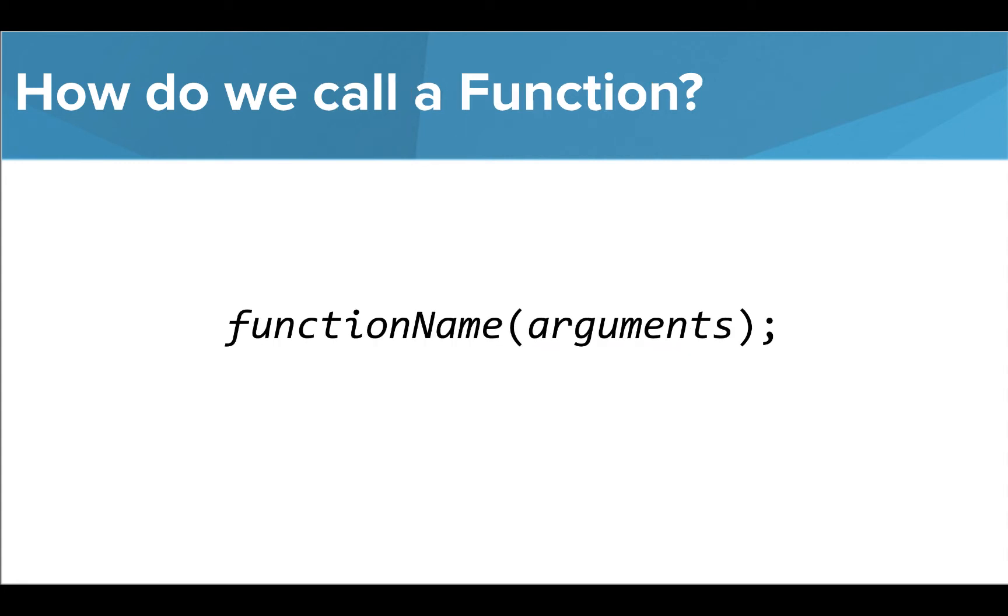Then, to call the function anywhere in our code, we simply write the function name followed by a set of parentheses. Any arguments for the needed parameters can be included here as well. Don't forget the semicolon.